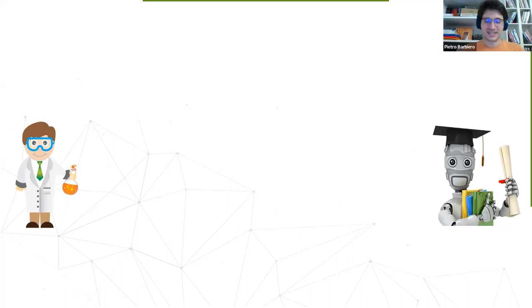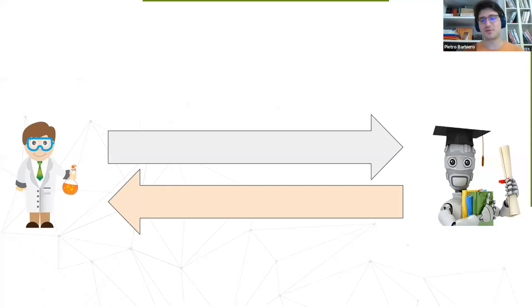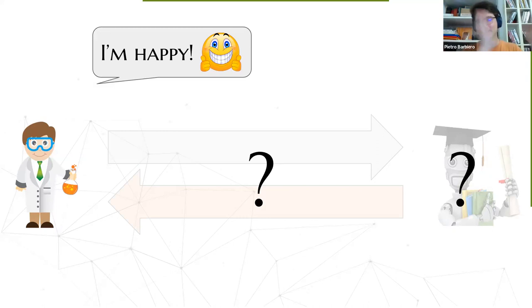To talk about this paper, let me start by introducing the two main characters of this talk. One is a researcher in AI, and the other one is a machine. This talk is about how we make these two characters communicate with each other in an efficient way, and we are interested in a specific problem in this communication.